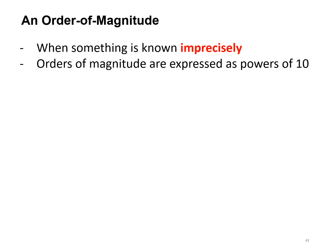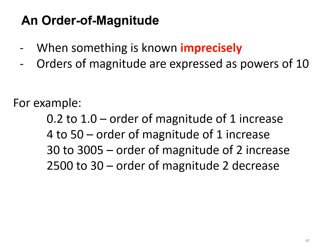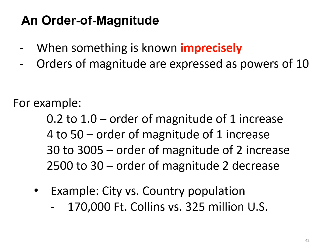Orders of magnitude. This is when something is known imprecisely. We talk about orders of magnitude as powers of 10. We might be able to say that something that went from two tenths to one, that was an order of magnitude increase. Or if we went from four to 50, that would be an order of magnitude increase. 30 to 300, that's an order of magnitude of two increase. This is just when we know something imprecisely, but perhaps we have better knowledge about what the ratio is as a better indicator than just either count value. City versus country population: Fort Collins, 170,000 versus 325 million U.S.